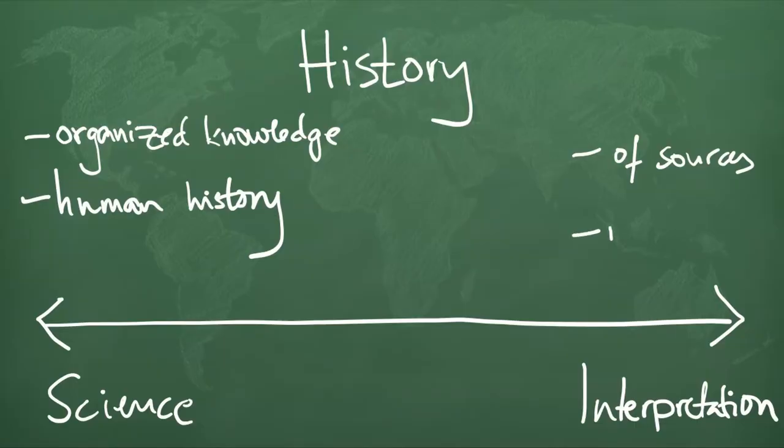And this brings us to the element of the theory most commonly associated with Collingwood — namely that history is re-enactment of the past. For how will the historian interpret the historical sources to find out what people of the past have been thinking, what their purposes were when deciding how to act? He must re-think them in his own mind, or re-enact them, so to speak. The historian must think himself into the action to discern the thought of its agent. And no further explanation of the event is needed, for this is already to explain it historically.